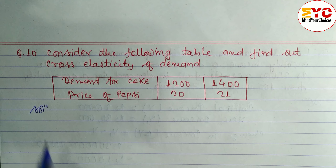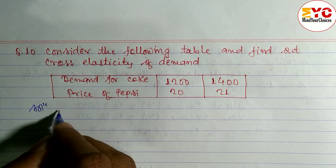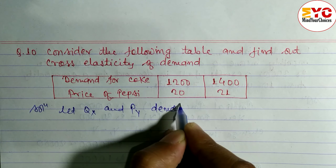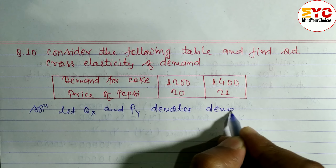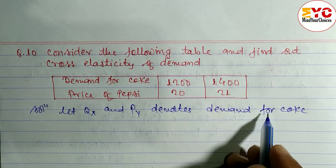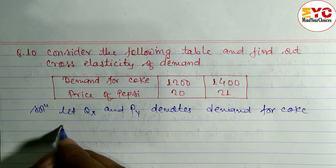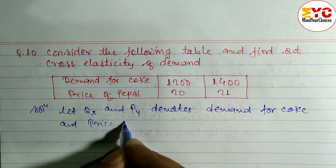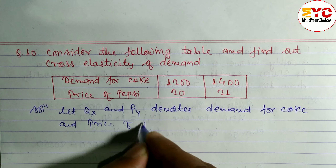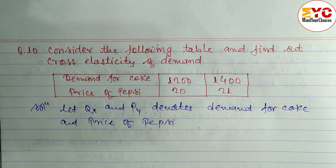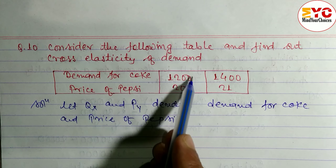Let's start the problem. First of all, let Qx and Py denote — Qx denotes demand for Coke, and Py denotes price of Pepsi.